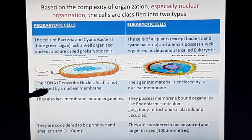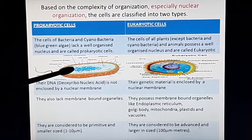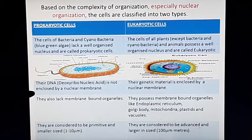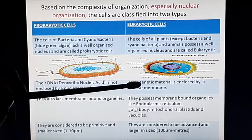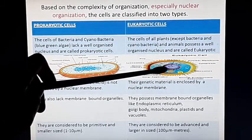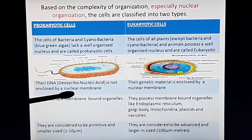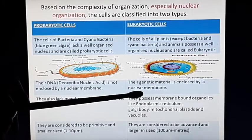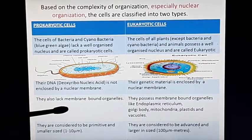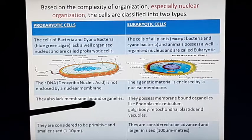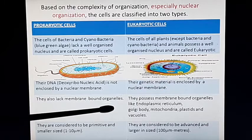Another difference between prokaryotic and eukaryotic cells: in prokaryotic cells, the genetic material DNA is not enclosed within any membrane — there is no surrounding membrane around the genetic material, which is why it is not well defined. In eukaryotic cells, the genetic material DNA is enclosed within a nuclear membrane. So in prokaryotic cells there is absence of nuclear membrane, while in eukaryotic cells nuclear membrane is present.